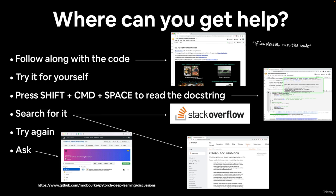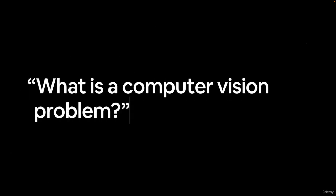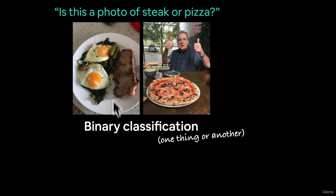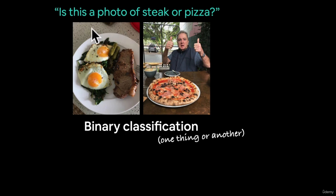With that said, speaking of computer vision, you might ask: what is a computer vision problem? Well, if you can see it, it could probably be framed as some sort of computer vision problem — that's how broad it is. For example, we might have a binary classification problem: is this a photo of steak or pizza? Our model would take in the pixels of an image and learn the different patterns that make up steak versus pizza — without us telling it what to look for.